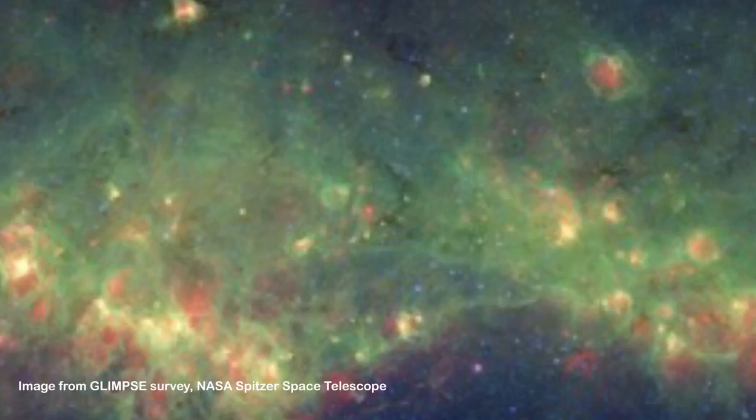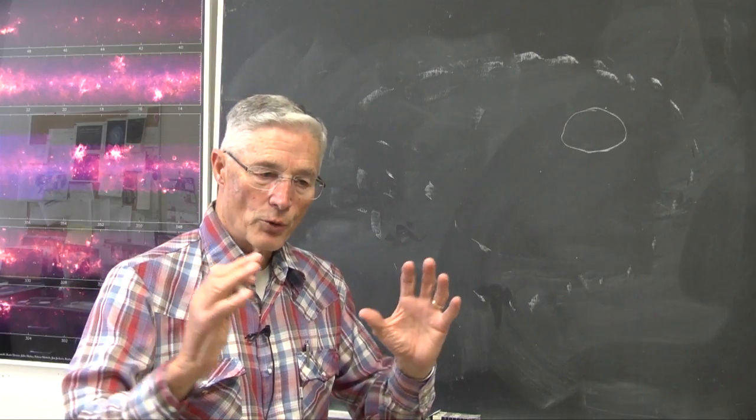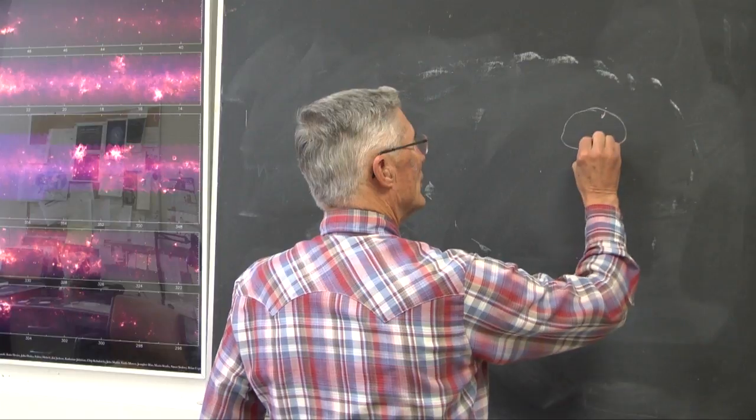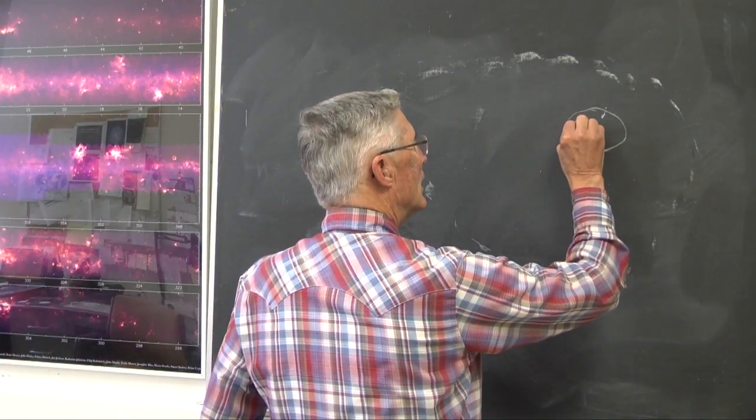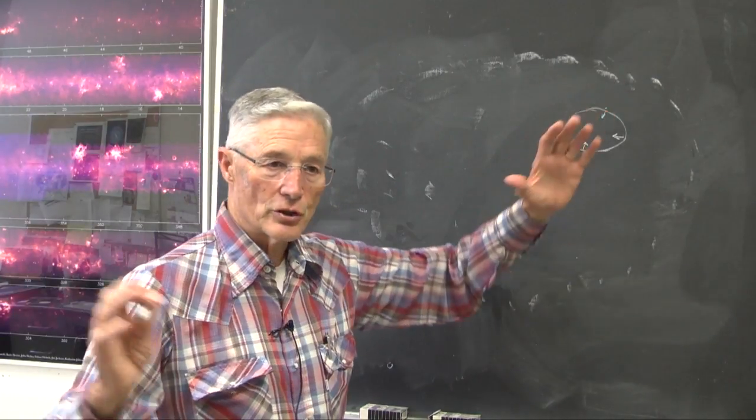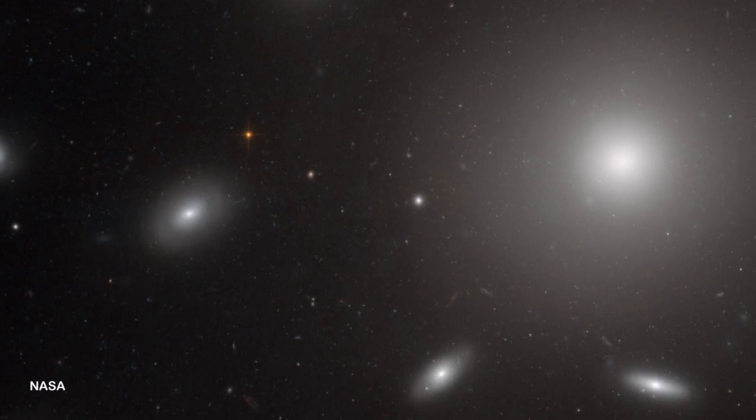Some piece of that cloud starts to, for some reason, become cool enough that it can't support itself against its own gravity. It starts to become gravitationally unstable, as we call it. What that really means is it starts to collapse under its own gravity.